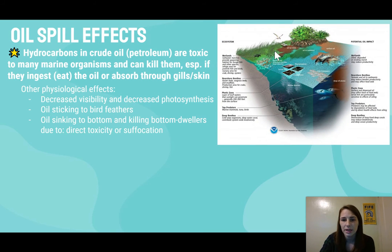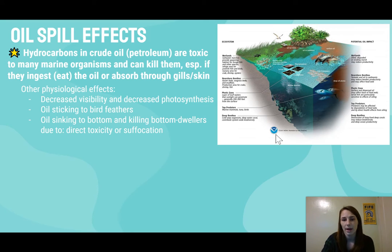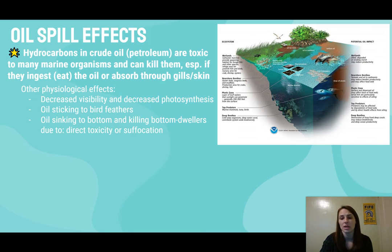This diagram shows all the different ways that oil can spread: surface oil, deep plumes throughout the water column, oil on the bottom, and oil reaching the shore — affecting all the different organisms along the way. This shows the wide range of impacts from an oil spill and all the different parts of the ecosystem that can be impacted.